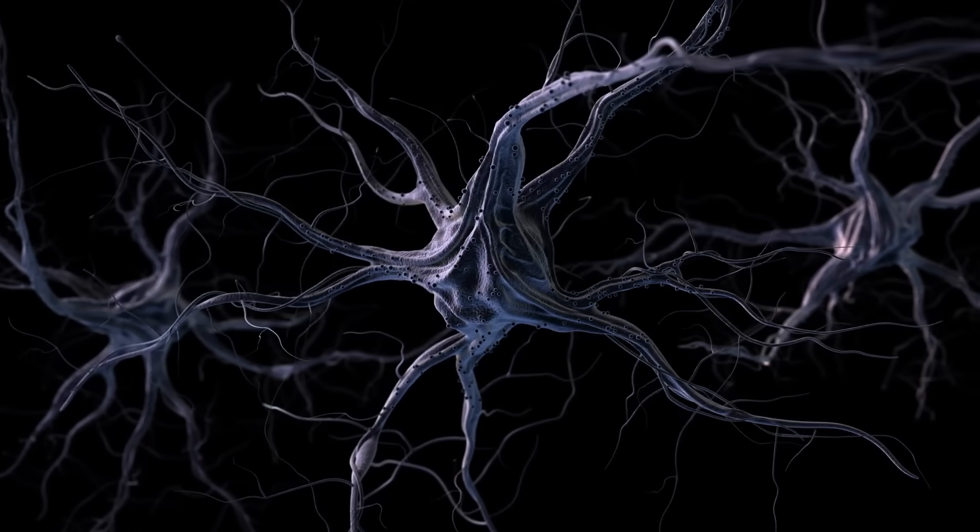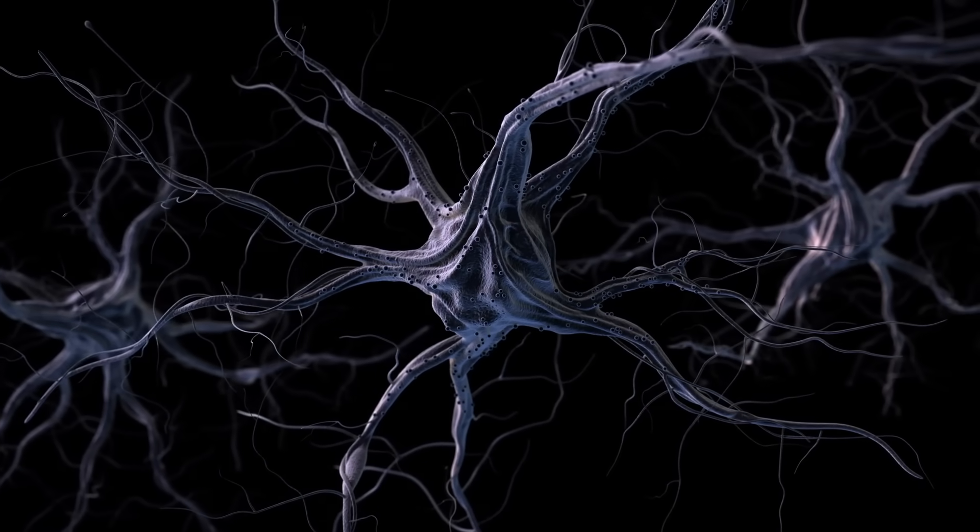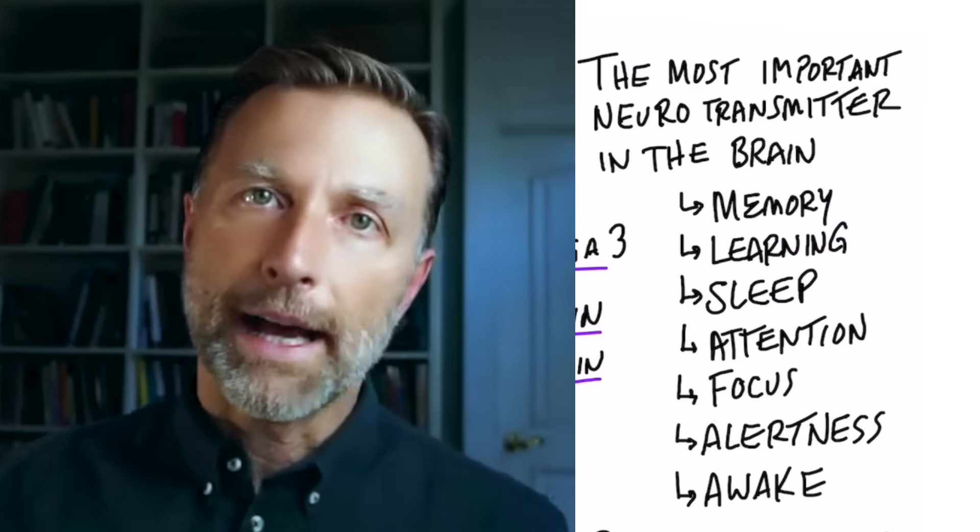Acetylcholine is a neurotransmitter, which means that it's like a hormone but it works through the nervous system. It's a communication particle that creates different effects.